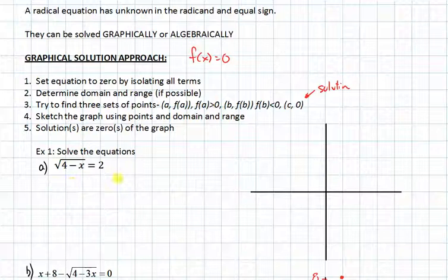If I were to look at the domain, that would be where the radicand is greater than or equal to 0, so corresponds to x less than or equal to positive 4.